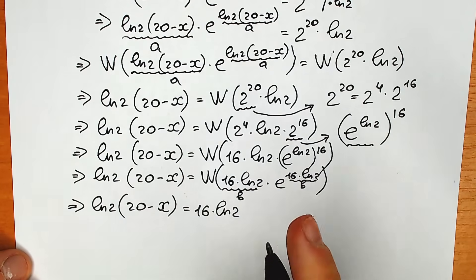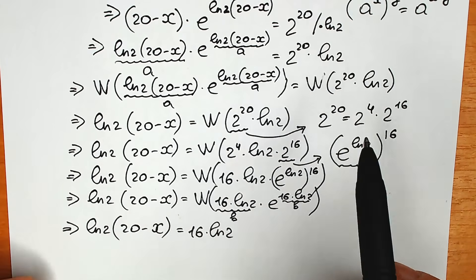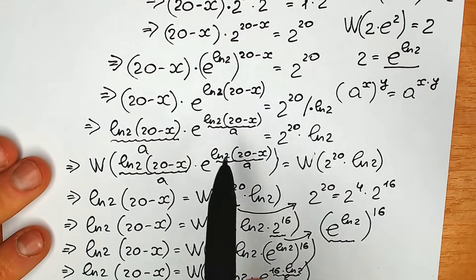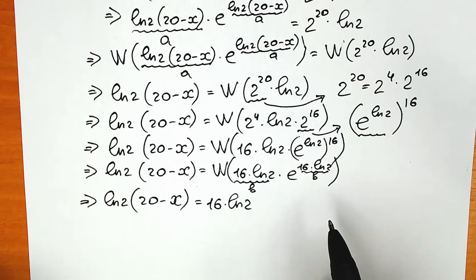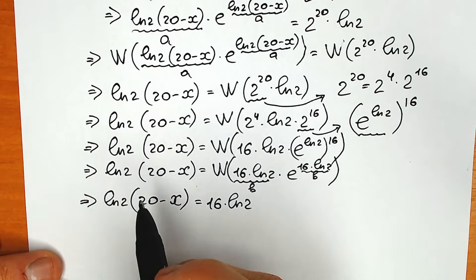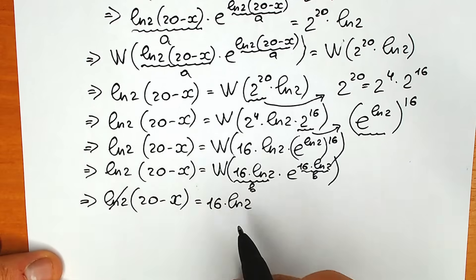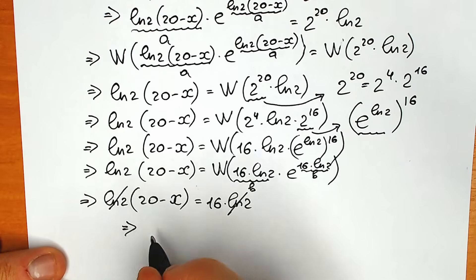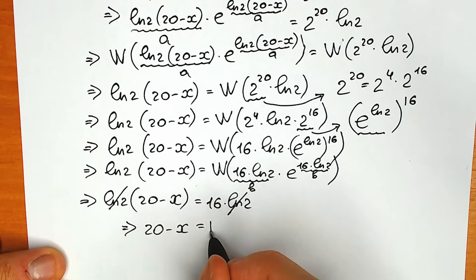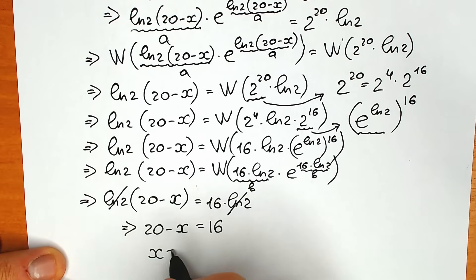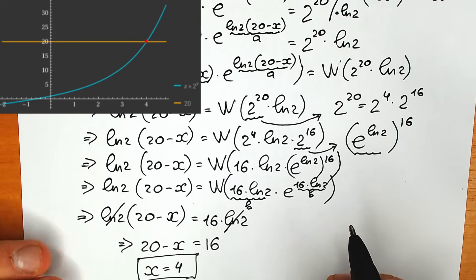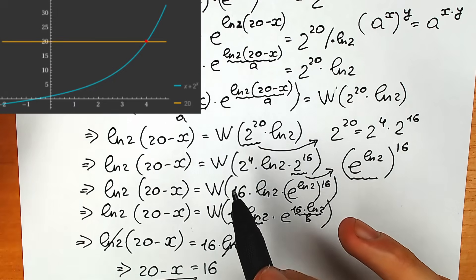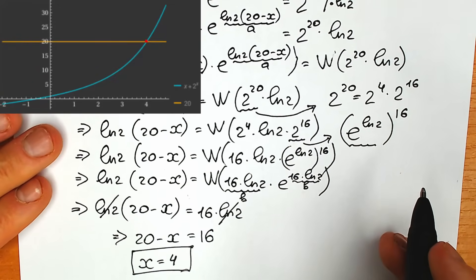After all these calculations, we reach a really pleasant expression. We can cancel natural log 2 from both sides, giving us 20 minus x equals 16, and therefore x equals 4. I really like this question because after all the complicated steps with Lambert W function, factoring, and multiplying both sides, we get this clean answer x equals 4.